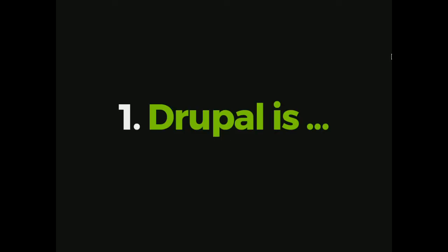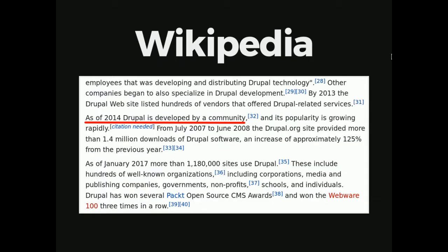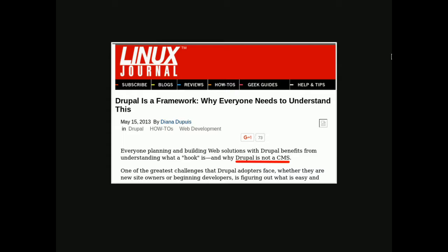The first part: let's talk about Drupal. You've been at DrupalCon for a few days and probably have a good idea what Drupal is. The kind of language we use — we say it's a content management system, developed by a community, which Wikipedia says has been happening since 2014. On the other hand, you could go to the Linux Journal and read that Drupal is not a content management system. So the language we use can be contradictory.